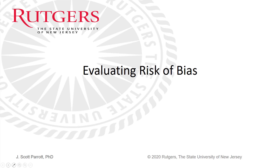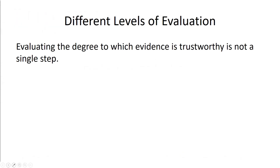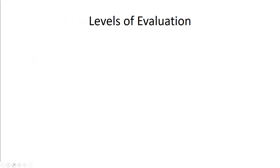Let's jump into covering some of the principles for evaluating risk of bias. This is within the context of going from bits of evidence and articles to actually changing patient practice. The first principle we have to have down is that there are different levels of evaluation — evaluating the degree to which evidence is trustworthy is not a single step.